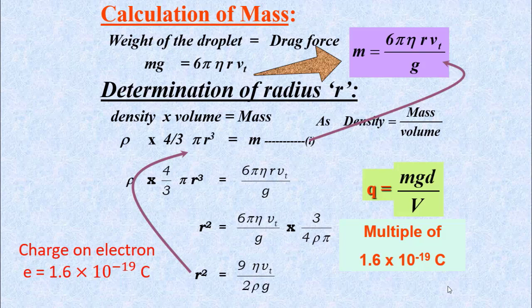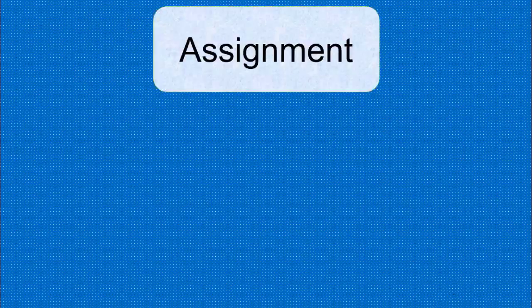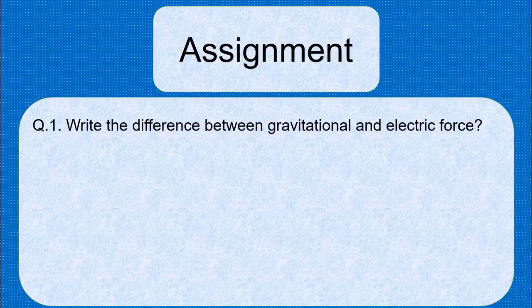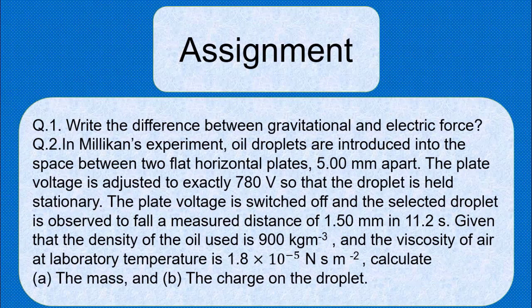There is an assignment which you can solve. You can understand the concepts and there is a numerical which is relevant to the oil drop experiment. Your assignments are these. Question number one is: Write the difference between gravitational and electric force. If you have studied Millikan's oil drop experiment, then you can use the equations which you can easily solve.